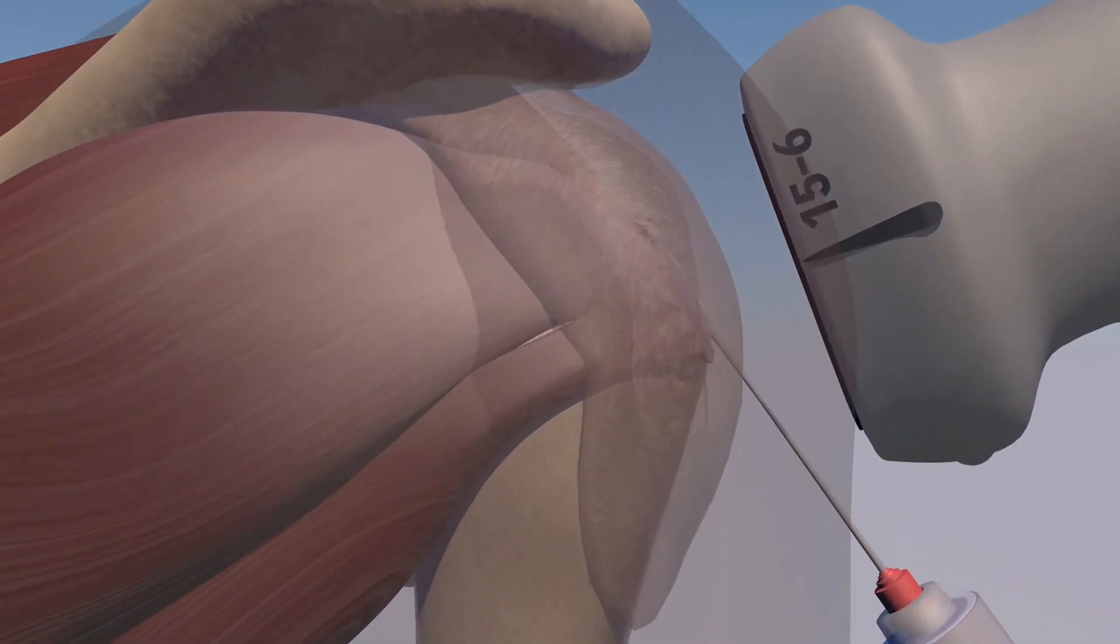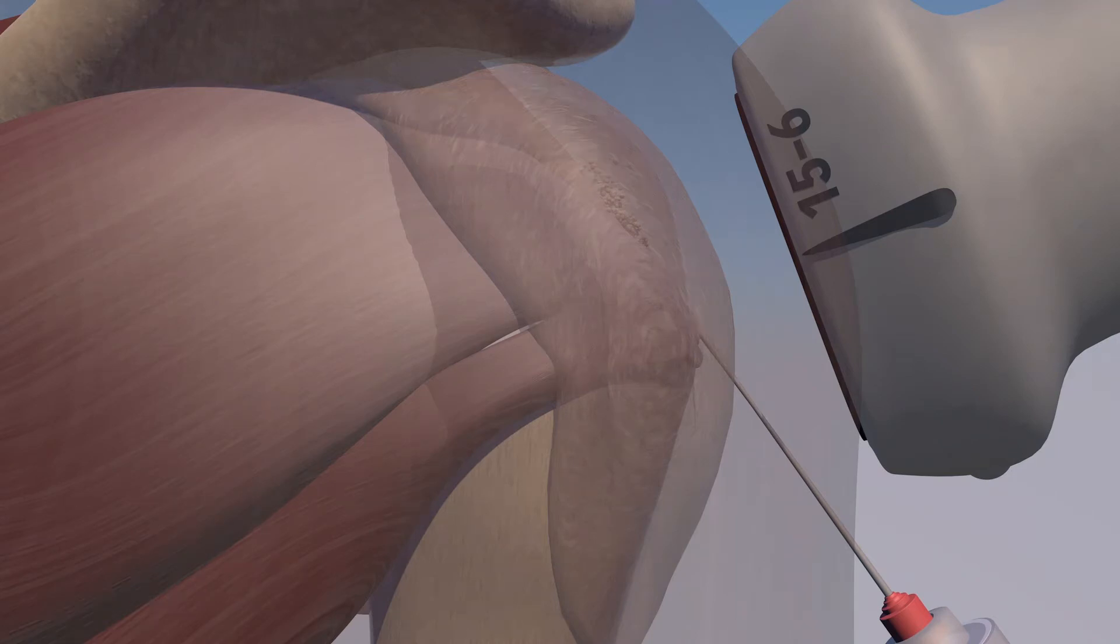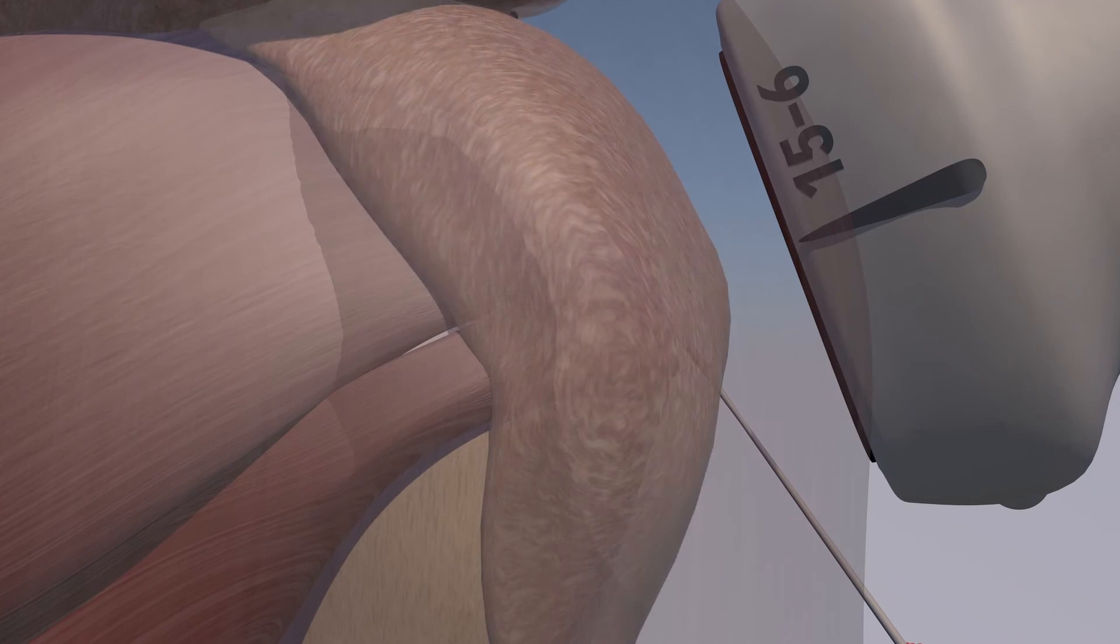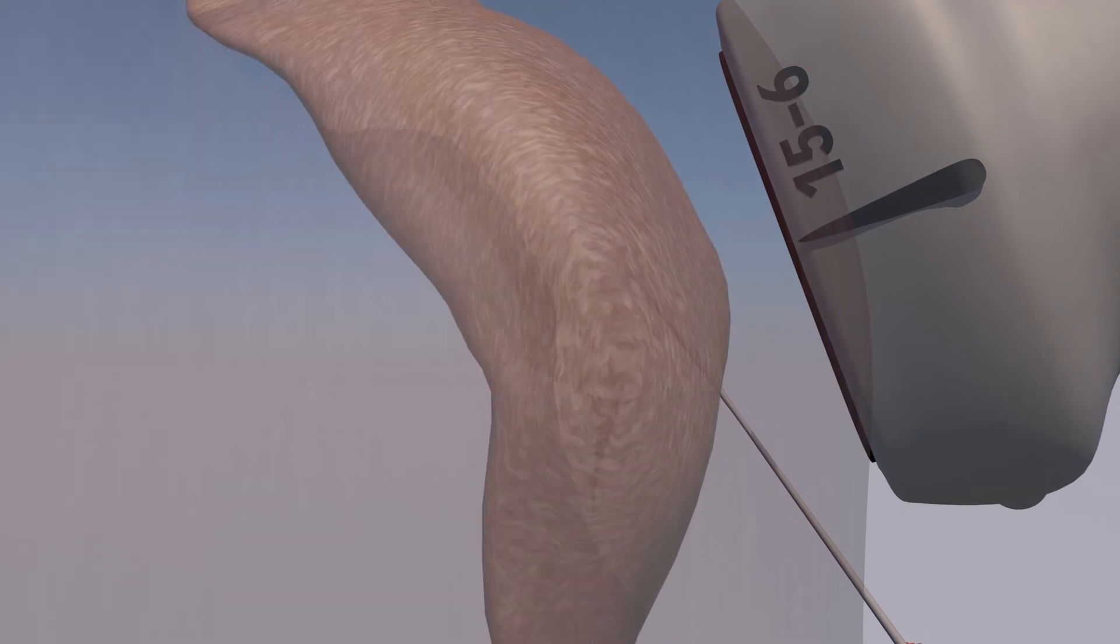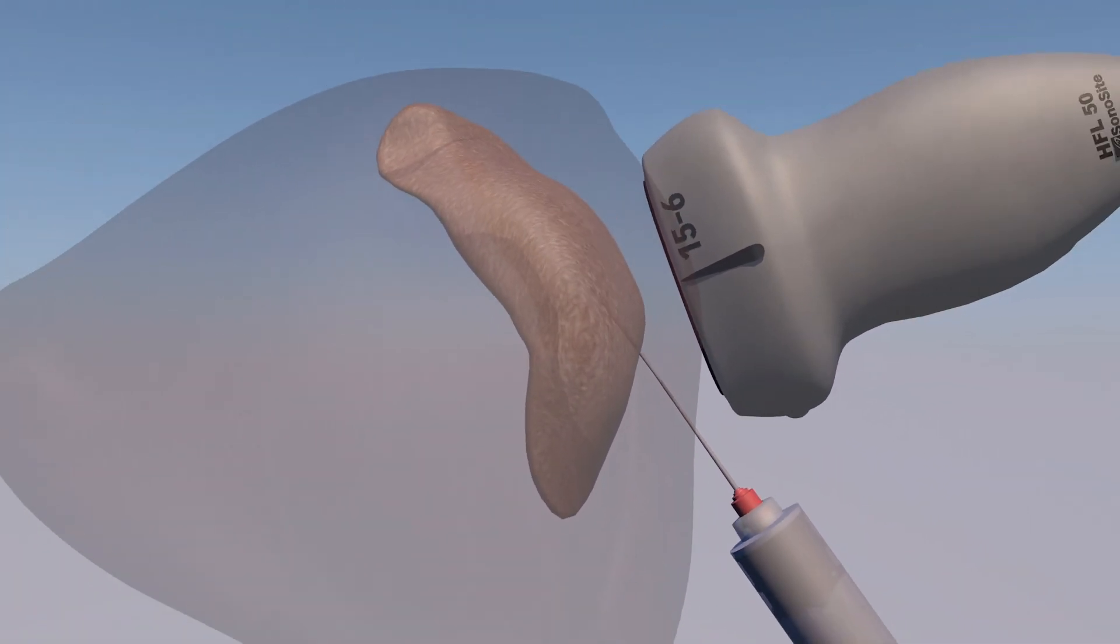And again, here's the needle going in and here's the injectate. You can see it going within the bursa itself. And now you're going to watch as the bursa gets a little bit spread out as the injection continues and it's pushing up against the deltoid muscle.